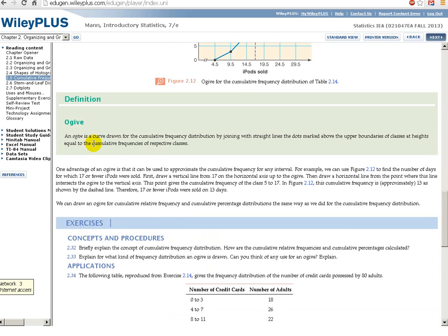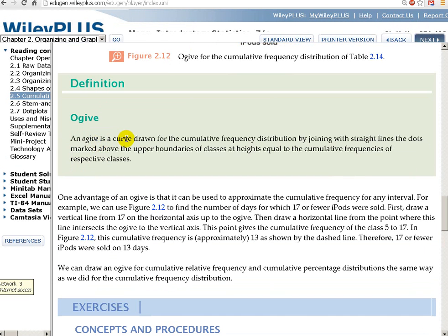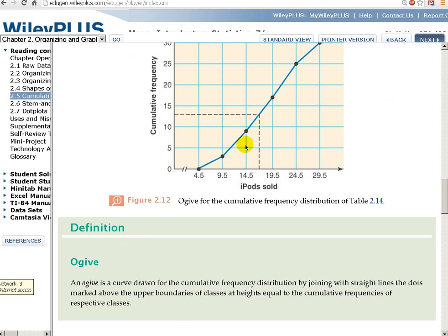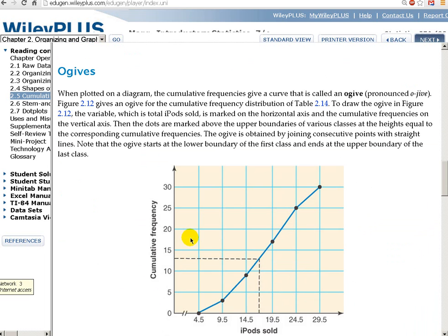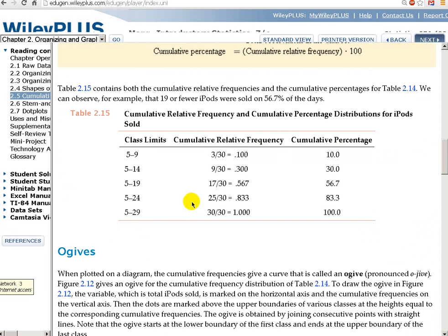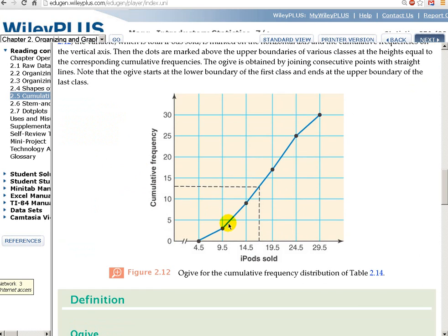So an ogive curve is drawn for the cumulative frequency distribution by joining with straight lines. So these are all straight lines. The dots marked above the upper boundaries of classes. So the upper boundary of the second class is 9.5, right? The upper boundary was 9, but it's between 9 and the next one was 10, so it's between 9 and 10, and so it's 9.5, and so on.